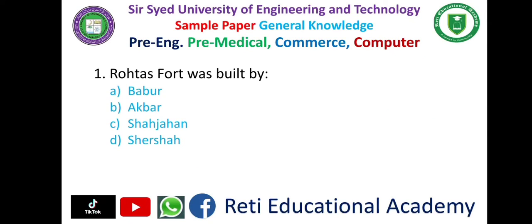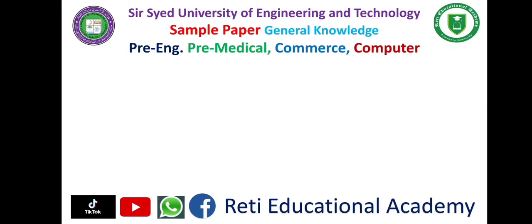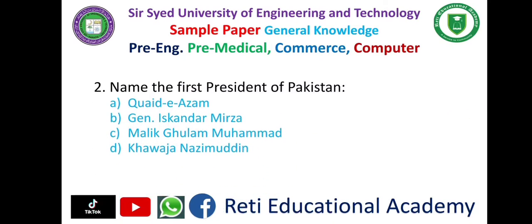General Knowledge MCQs. Question number 1: Rohatas Fort was built by — A. Babar, B. Akbar, C. Shahjahan, D. Sher Shah. The correct answer is D: Sher Shah.